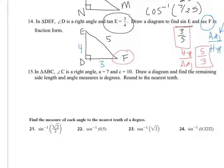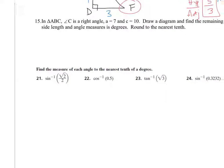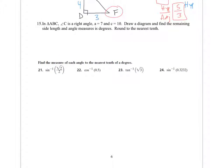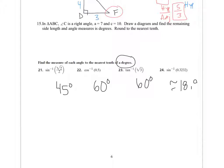For problems 21 through 24, have your calculator in degree mode. Sine inverse of root 2 over 2 is exactly 45 degrees. Cosine inverse of 0.5 is exactly 60 degrees. Tangent inverse of root 3 is exactly 60 degrees. The last one is approximately 18.9 degrees. These are straightforward calculator problems.